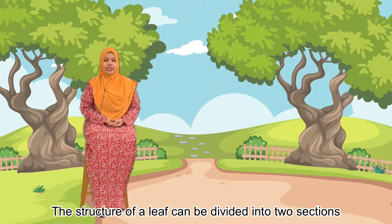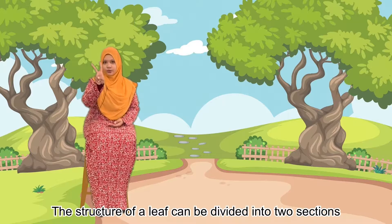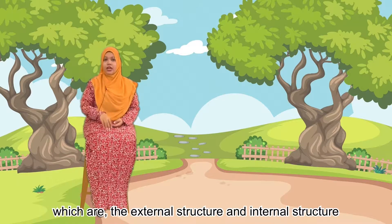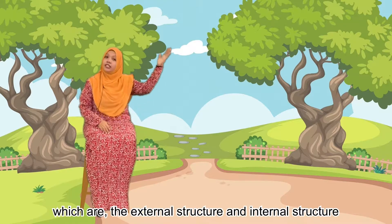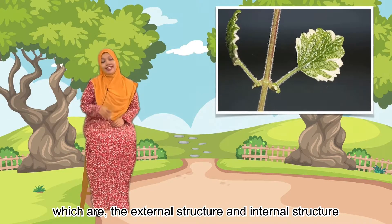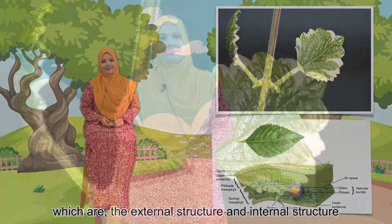The structure of a leaf can be divided into two sections, which are the external structure and the internal structure.